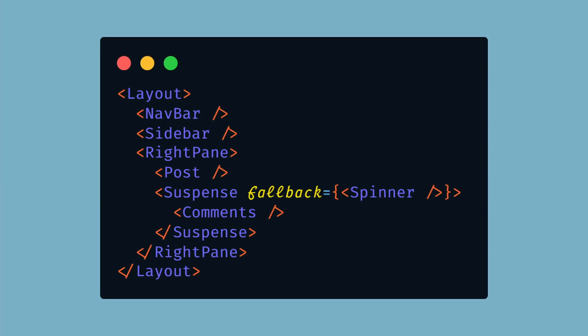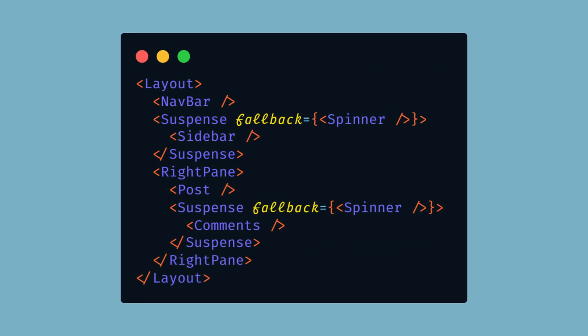So we're going to suspend the comments so that the viewer can start reading the article, and then we'll load the comments in the background. Another cool thing about Suspense is selective hydration. In this example we're suspending the sidebar and the comments. Hydration will begin on the first suspended component in the tree, so the sidebar will hydrate first — but if the user tries to interact with the comments section, React will prioritize hydrating the comments instead of the sidebar.